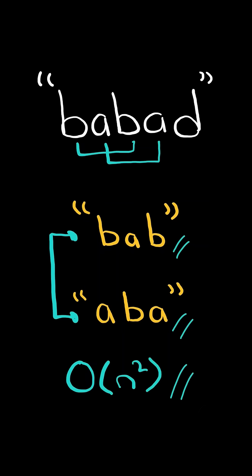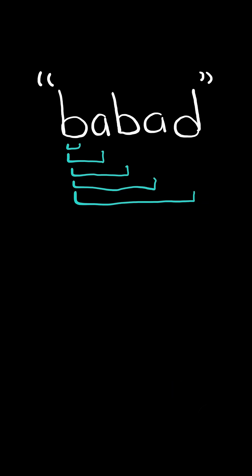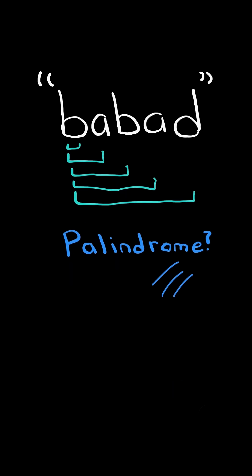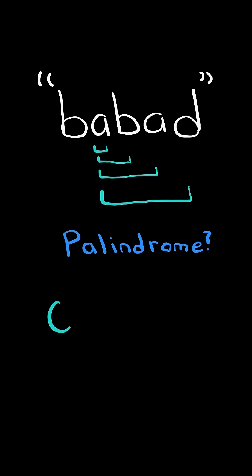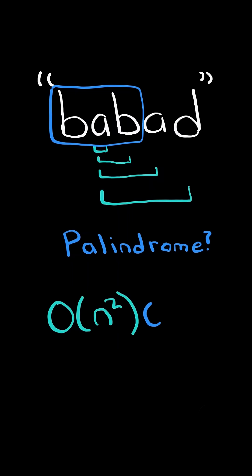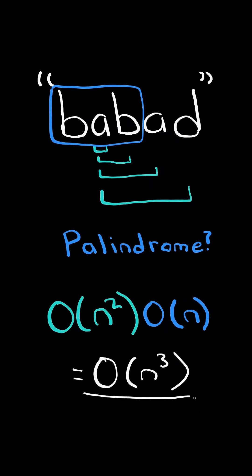We will solve this in O(n²) time. We could consider every possible substring and check if it is a palindrome. To iterate over every possible substring takes O(n²) time and to check if a substring is a palindrome takes O(n) time, so in total it takes O(n³).